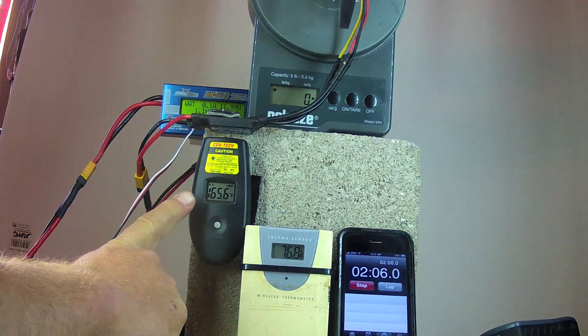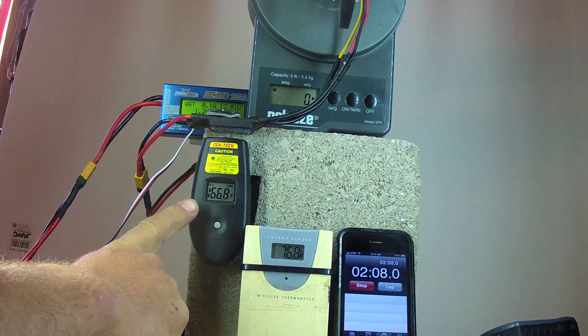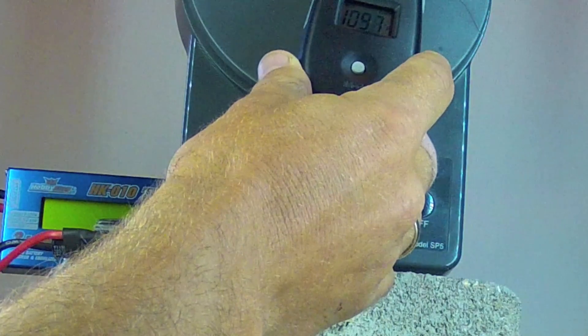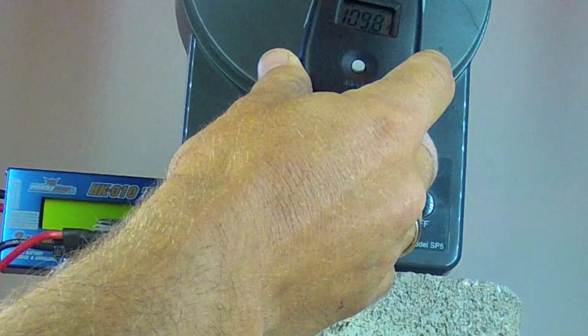So the temperature of the Turnigy Hexfet ESC is 166 degrees. After unplugging the power plane, I'm measuring the temperature of the motor itself. It's 110 degrees Fahrenheit.